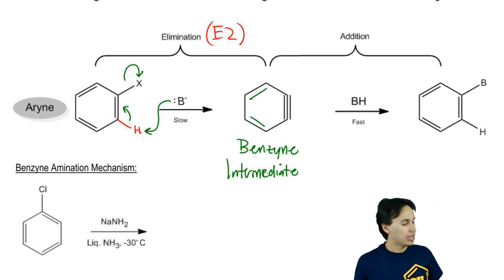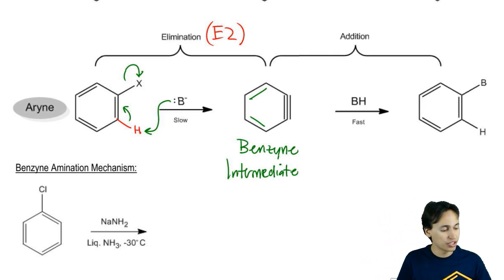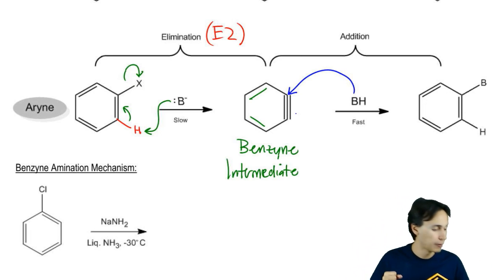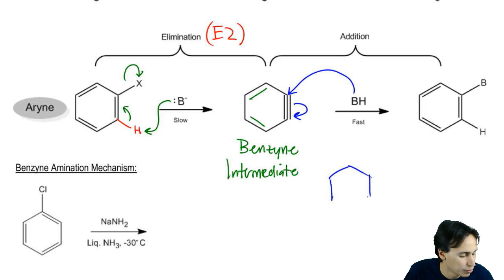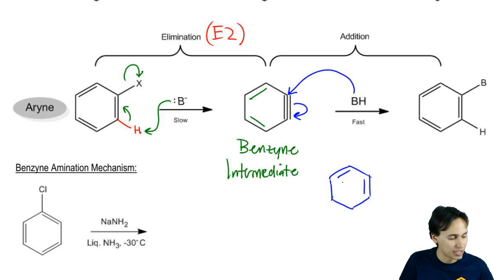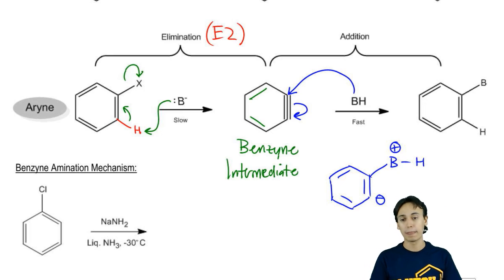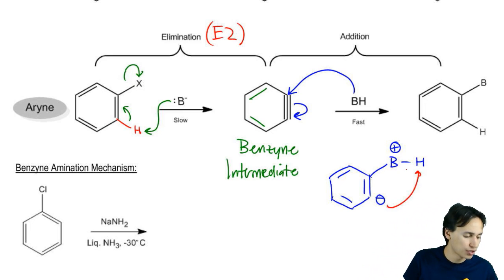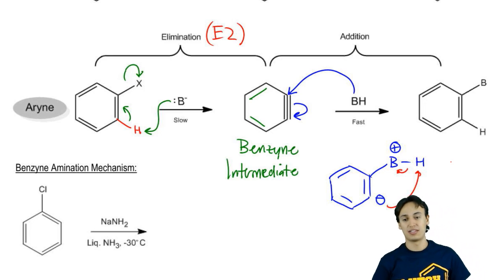Now we have to add. The way we add is with the conjugate acid. The conjugate acid can now be used to add to the benzyne. The mechanism is a little weird, but just bear with me. We take our conjugate acid, attack one side of the triple bond, and kick those electrons down to form an anion. This forms another intermediate: benzene is back with a negative charge, and BH now has a positive charge because it has one too many bonds.